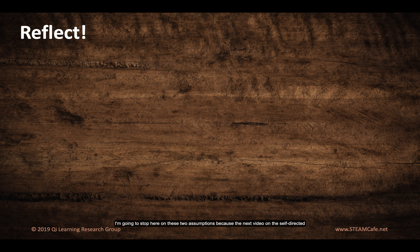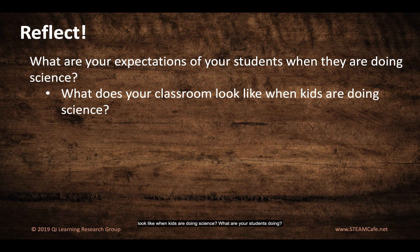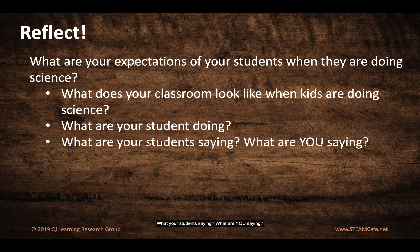I'm going to stop here at these two assumptions because the next video on the self-directed learning assumption is a little longer. Besides which, this is a good place to stop and reflect. Here are the questions for this section: What are your expectations of your students when they are doing science? What does your classroom look like when kids are doing science? What are your students doing? What are your students saying? And what are you saying? This piece is about those expectations. And then, how will you know about your students' interpretations and misinterpretations of your lesson? That's it for now, so see you in the next video.